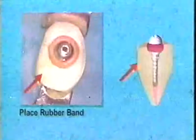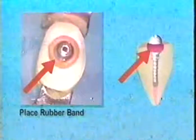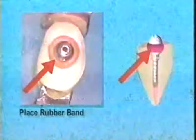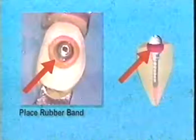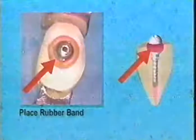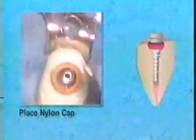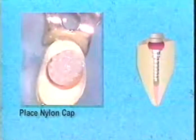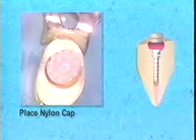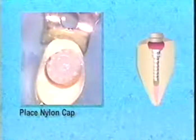Incorporation of the nylon attachment cap: It is important to first place the rubber band on the head of the post. If the rubber band is not in place, there is a risk that the cold-cured acrylic could lock in under the coronal ball of the post head, making the denture difficult to remove. The nylon cap is now placed on the ball of the post. As an added feature, we will continue to show this procedure with the new Easy Change Keeper and Cap Insert System, which may be purchased separately.